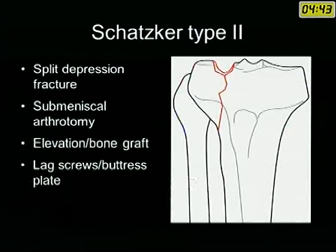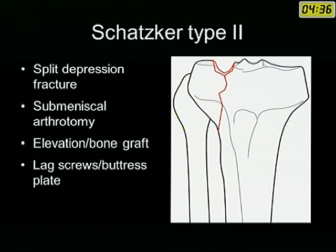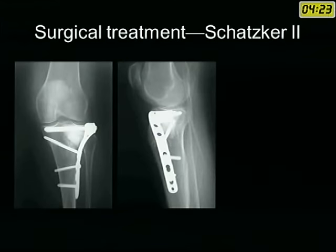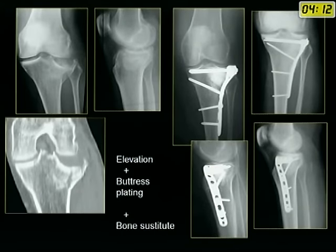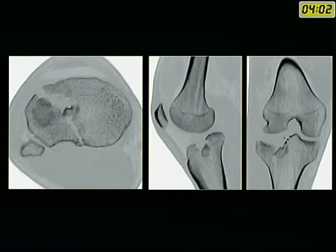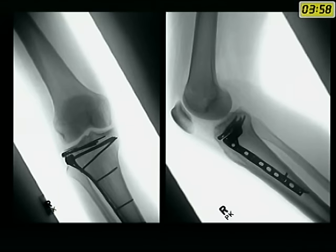With plating, immediate mobilization can be started. Schatzker type 2 — a split with depression — requires elevation, bone grafting, and plating; it is mandatory to elevate and buttress this fracture. A CT scan gives the exact amount of depression. Even fractures that look acceptable on X-ray may show significant depression on CT, requiring elevation and supplementation with subcondylar screws to maintain articular reduction.